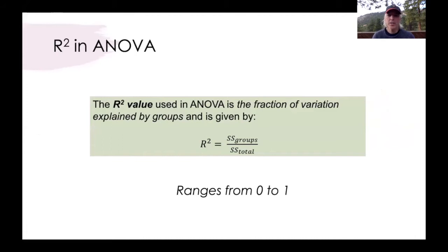An R-squared value is a measure of the fraction of total variation that is explained by some predictor. In this case where we're talking about a single factor ANOVA, differences among groups are going to explain a certain proportion of total variation and that's referred to as our R-squared.